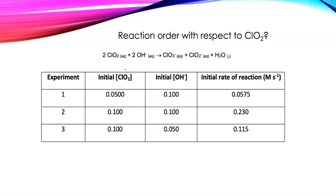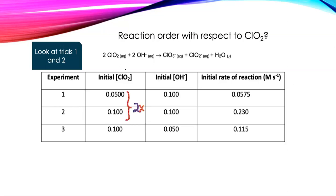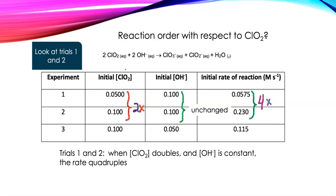I've got trials where the concentration of ClO₂ is constant and I changed the concentration of hydroxide, and experiments where the concentration of hydroxide is constant and I'm changing the ClO₂ molarity, and then I look at what that does to the rates. What's the reaction order with respect to ClO₂? To figure this out, we look at trials one and two — in those trials the hydroxide ion concentration isn't changing, but I am changing the ClO₂ concentration. The concentration of ClO₂ doubles, but the hydroxide ion concentration does not change. The rate changed fourfold. When the ClO₂ concentration doubles and the hydroxide ion concentration is constant, the rate quadrupled — that tells me this reaction is second order with respect to ClO₂.